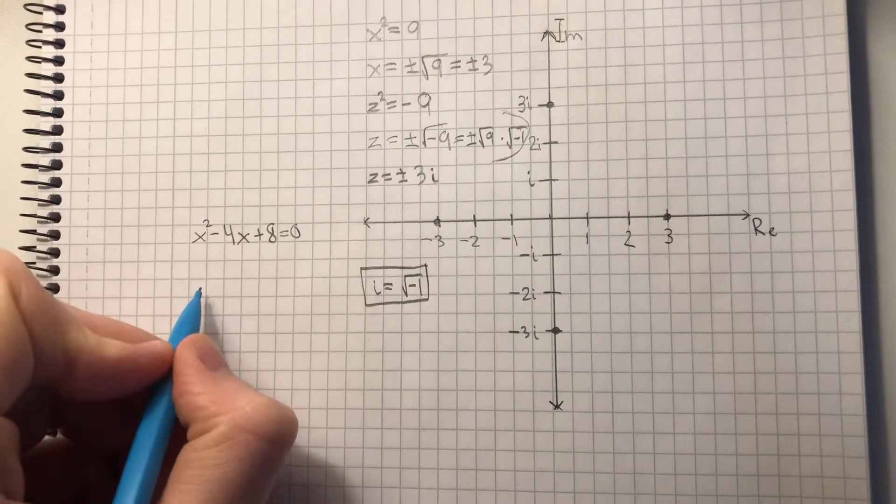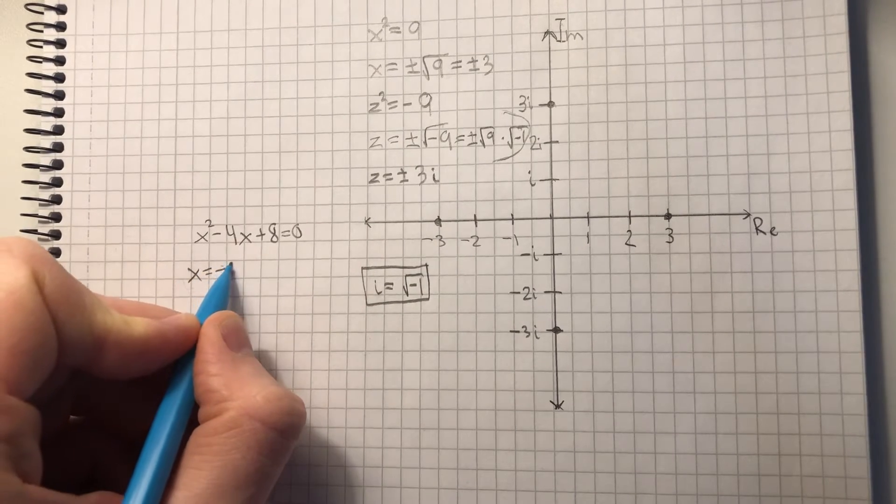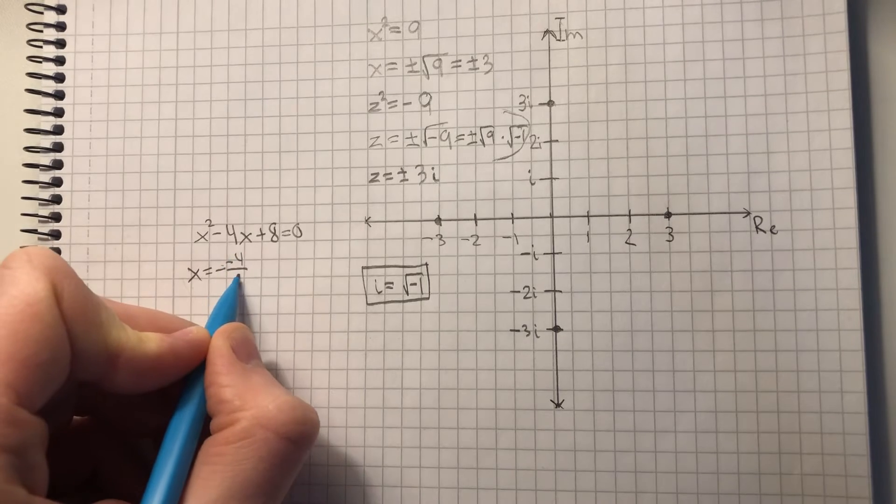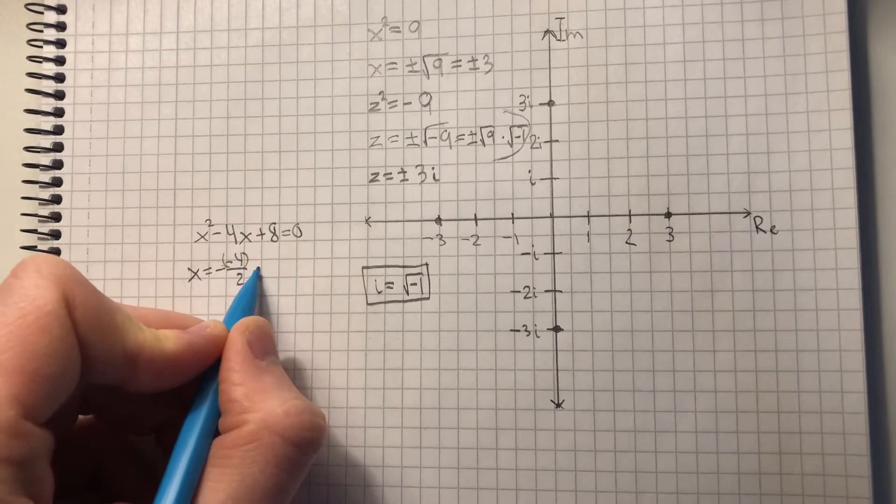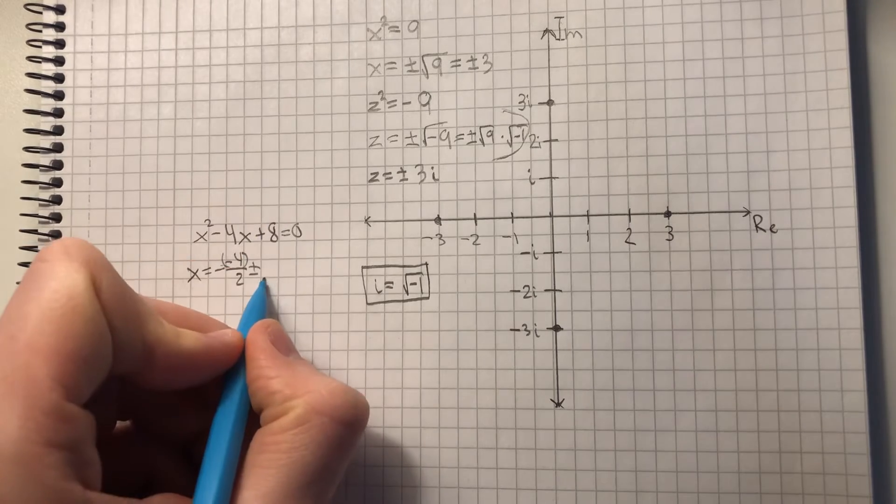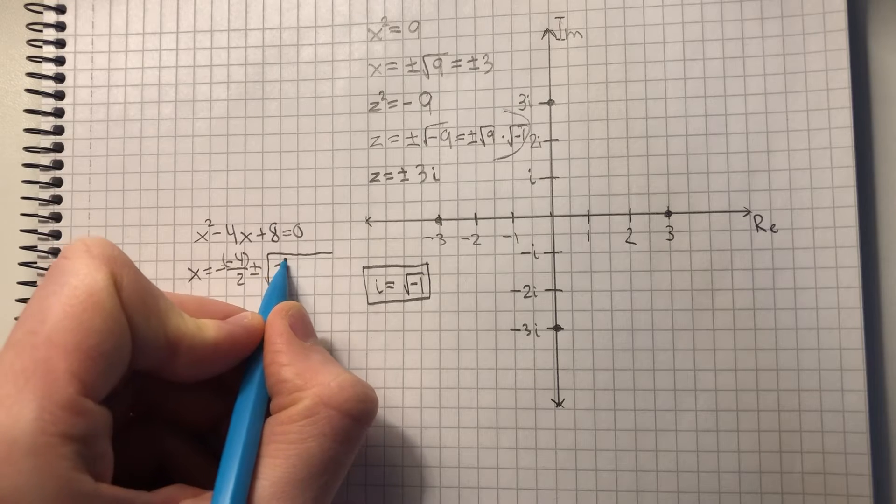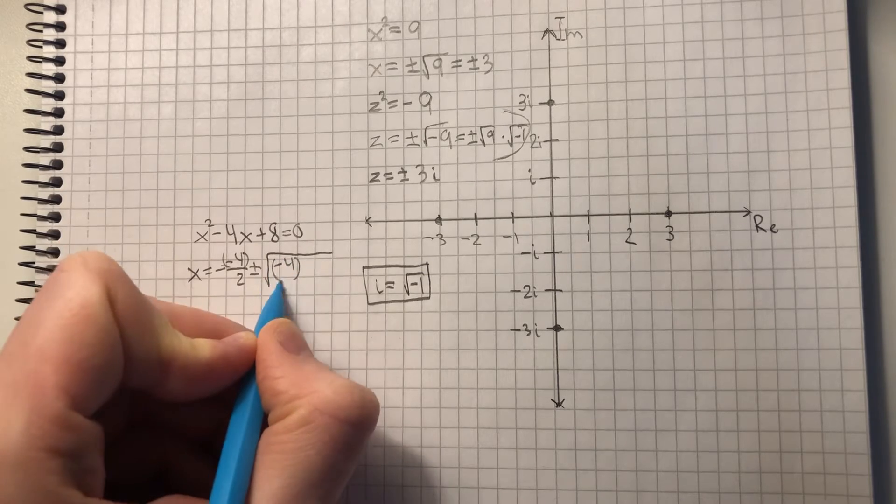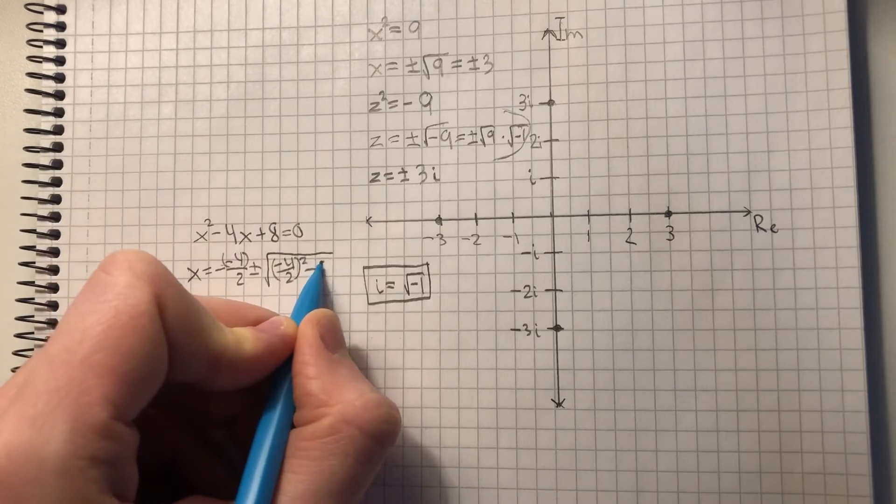So we just solve for x. It's pretty straightforward. x equals minus minus 4 divided by 2, plus minus, minus 4 divided by 2 to the power 2, minus 8.